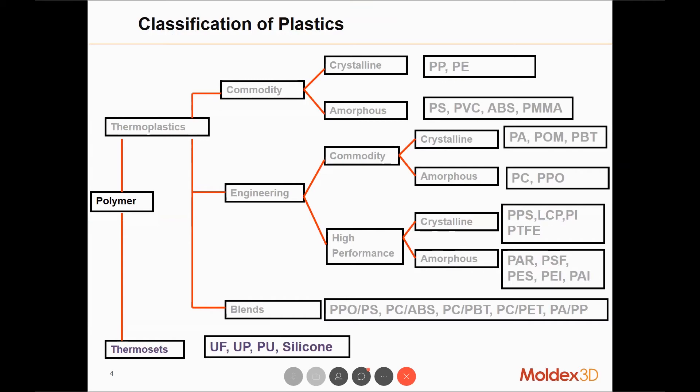Then we have another category, the thermosets, including polyurethane (PU), silicone, liquid silicone rubber, rubber, epoxy, and many other different materials.